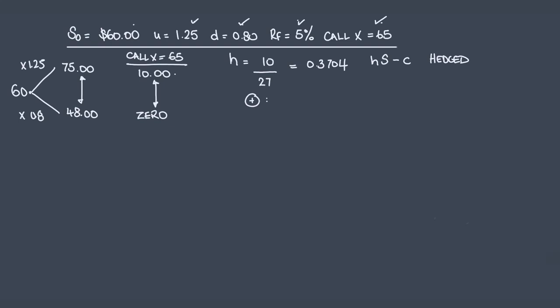What happens if the stock price goes up? Well, if the stock price goes up at T1, if you'd gone long H units of S, you would have 0.3704 units of a stock now worth 75. If you'd gone short on the call, the payoff on the call is 10. You are short, so that's against you, minus 10.